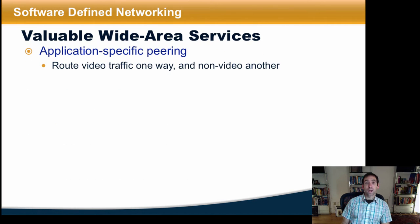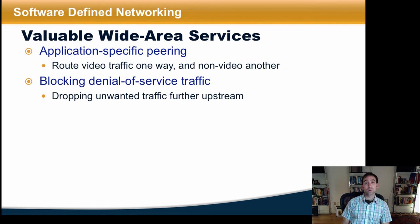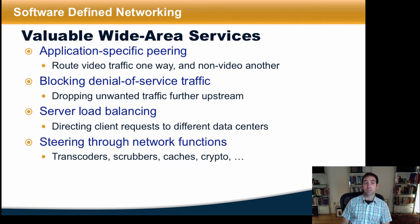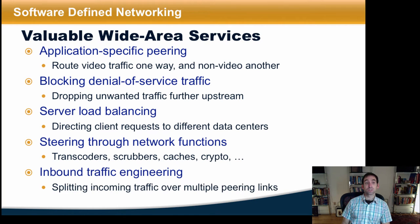There are a variety of wide area services that would be extremely valuable to network operators if only they had better ways to implement them. One possibility is application-specific peering, or providing the ability to autonomous systems to exchange traffic only for specific applications, such as video streaming. Another application that could be significantly enhanced is the ability to block denial of service traffic, such as the ability to block traffic in upstream autonomous systems much closer to the source. Other possible applications include directing client requests to different data centers depending on where they're originating, steering traffic through various network functions, and various types of inbound traffic engineering, such as splitting incoming traffic over multiple incoming peering links.